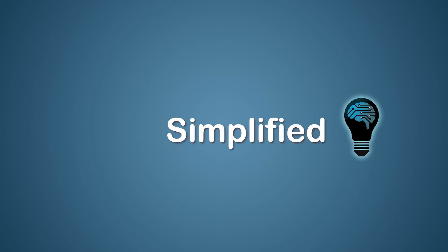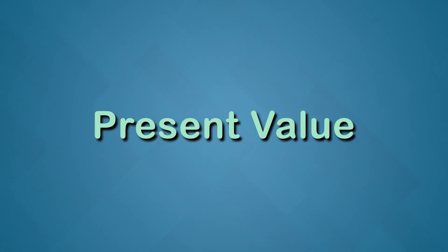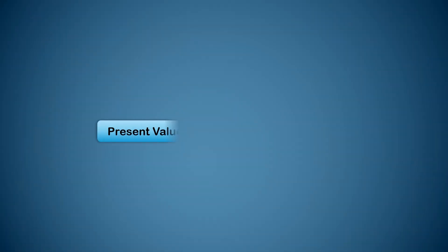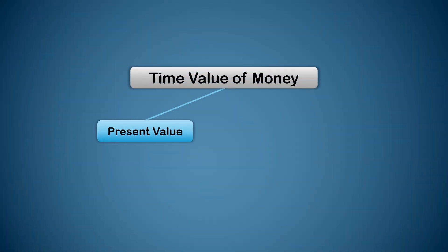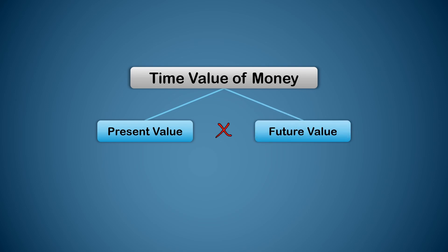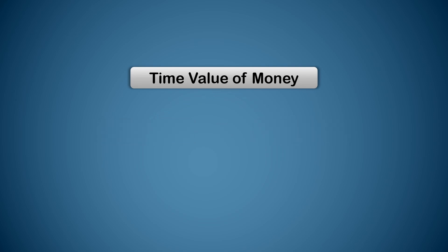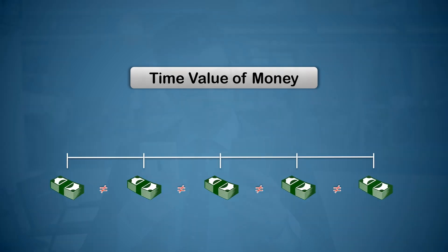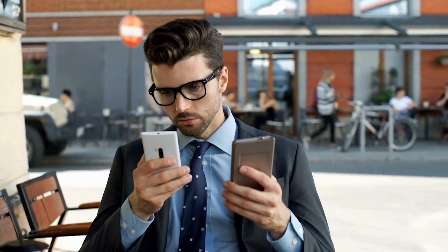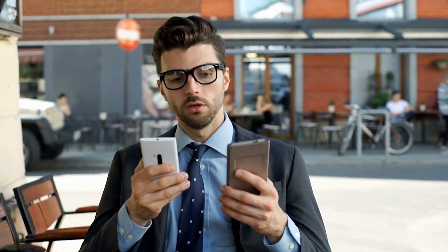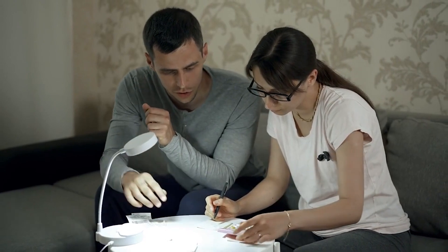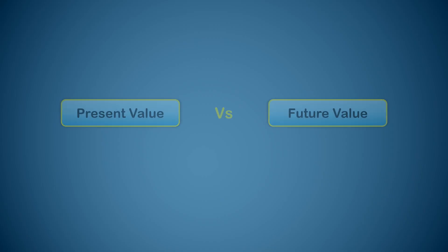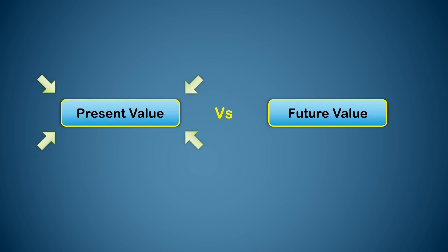Welcome to the channel Simplified. Today we will discuss present value of money. Present value is related to the concept of time value of money and is the inverse or opposite of the concept of future value. Time value of money refers to the idea that cash received at different points of time are of different values. When we need to compare different schemes of payment where cash is received on different dates, we need to calculate either future value or present value to make them comparable.